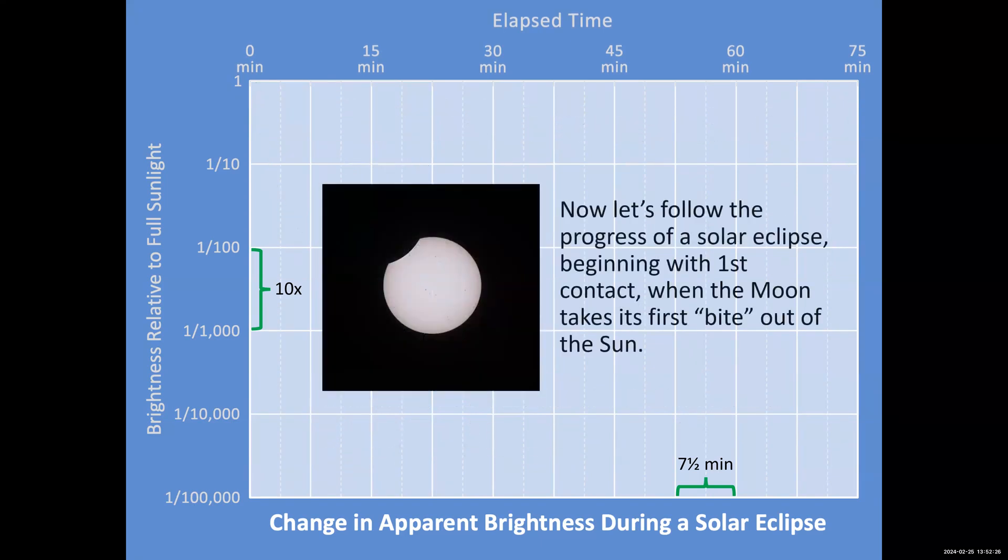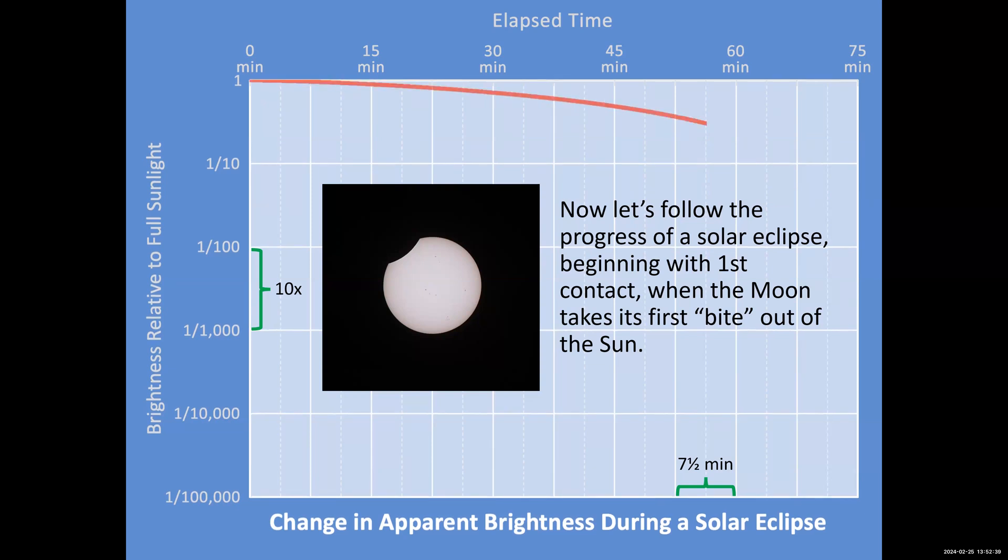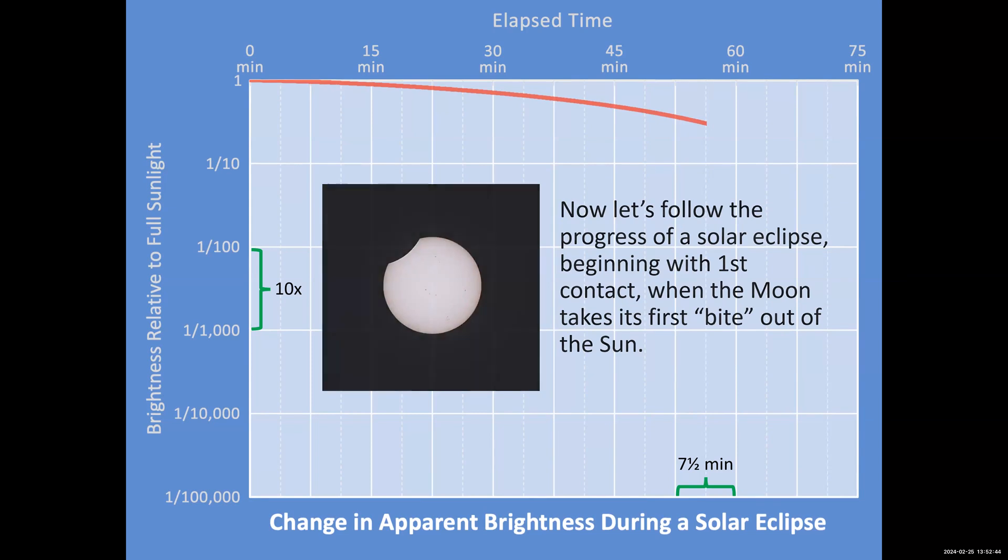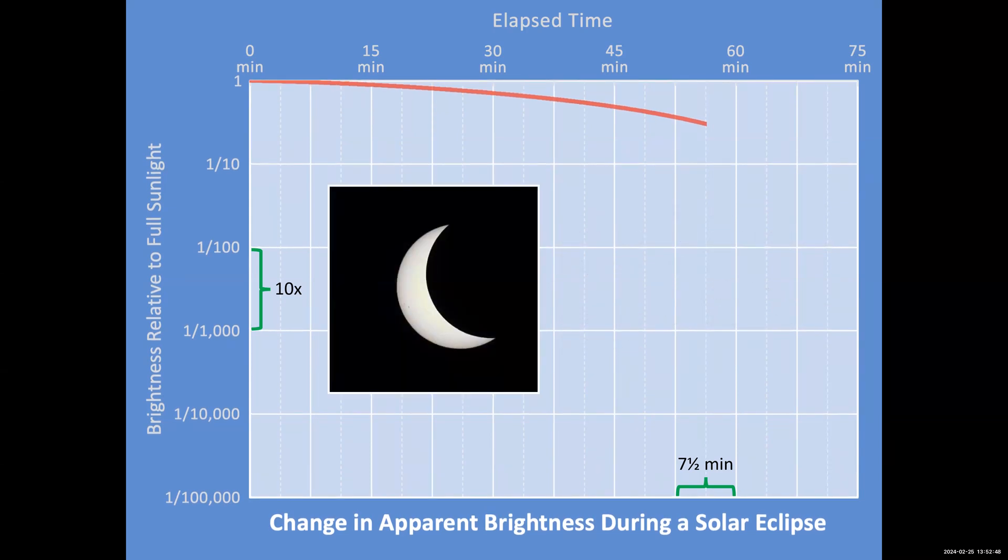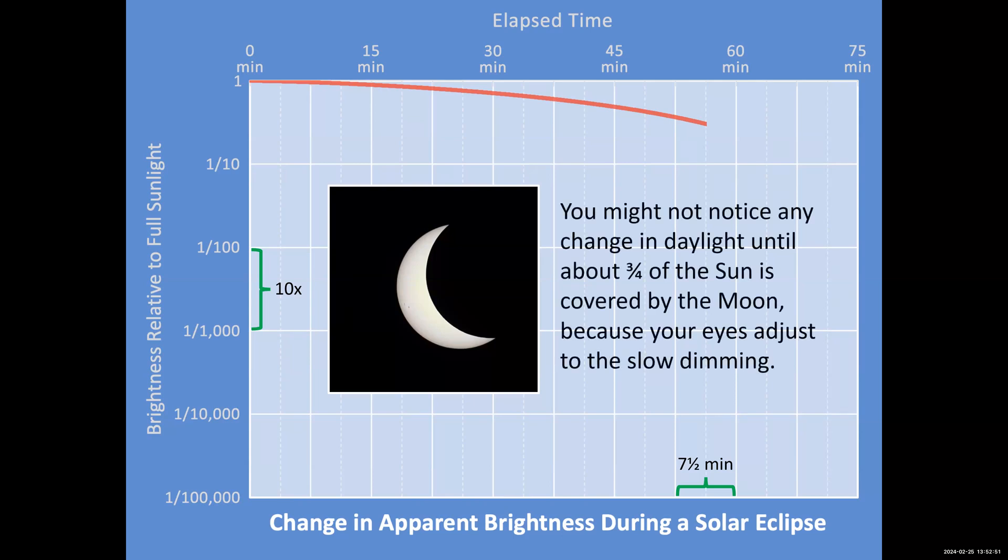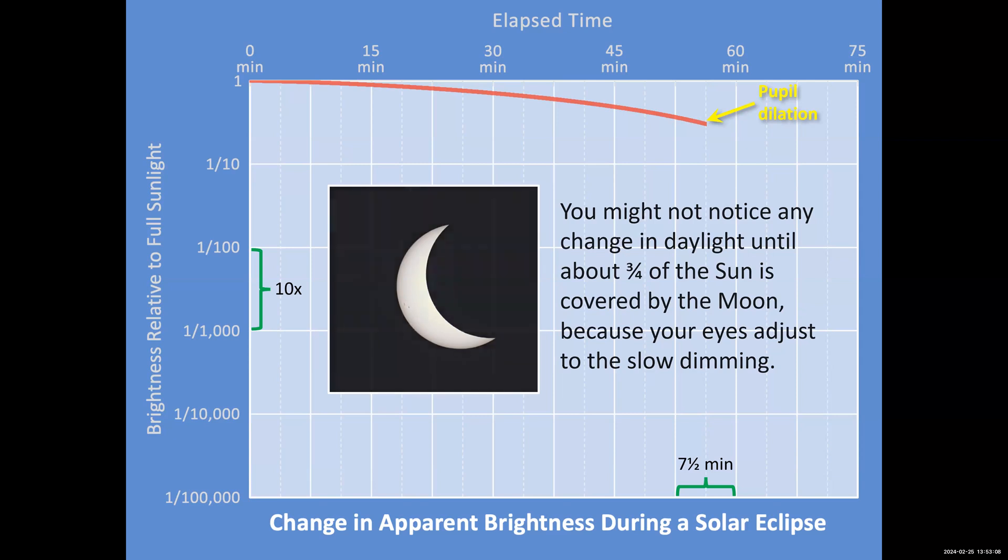Let's start with the solar eclipse from first contact. This image is showing about a 10 percent eclipse. As the sun is being eclipsed, almost an hour into the eclipse, we won't even notice that the sun is being eclipsed. At this point, we've blocked out about three quarters of the sun and we won't even have really noticed because as the sun is being blocked out by the moon, our eyes are adjusting just like they adjust as we walk into a dark room. Our pupils dilate, opening up to let in more light.